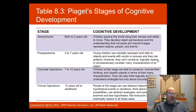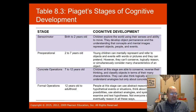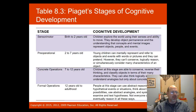The pre-operational stage spans two to seven years old. Children mentally represent and refer to objects and events with words and pictures, and they acquire language. However, they cannot yet conserve, logically reason, or simultaneously consider many characteristics of an object.